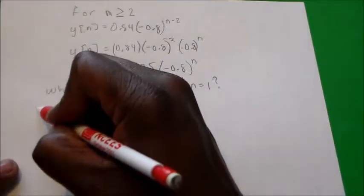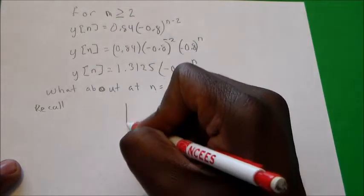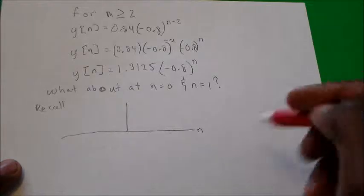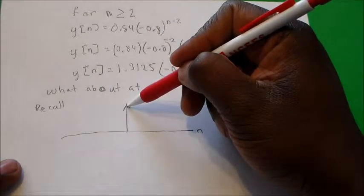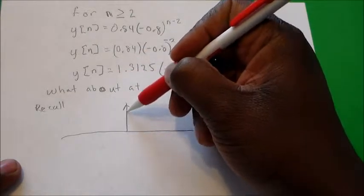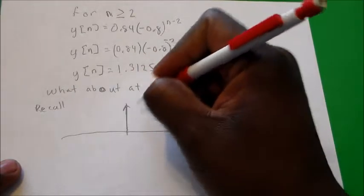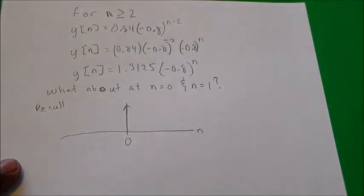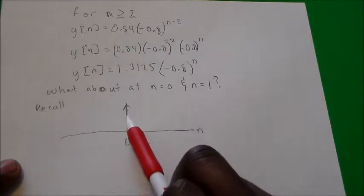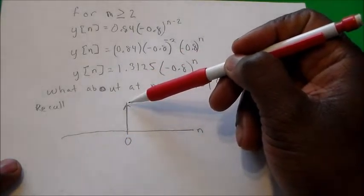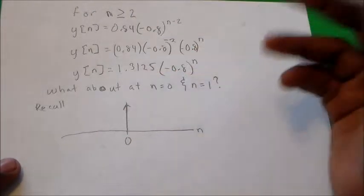One way we can do this is to use a delta function. The delta function, looking at this in discrete time, has infinite amplitude and zero area under the curve, so we represent it using an arrow. That value is only at time n equals 0; everywhere else the delta function is 0. It has an infinitely large value there, and if we multiply that infinitely large value by any value, we get that value back.